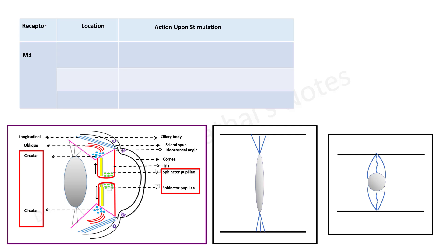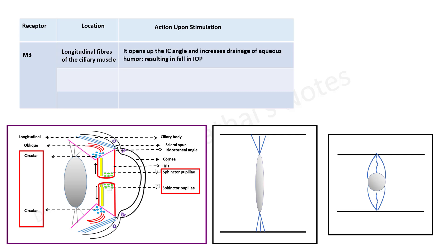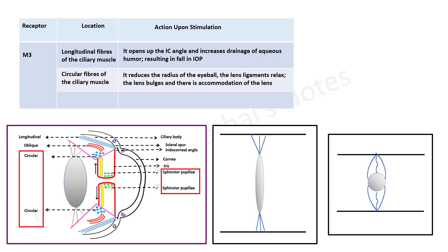When M3 receptors in the longitudinal fibers of the ciliary muscle are stimulated, these muscles contract, the iridocorneal angle opens up, drainage of aqueous humor increases, and intraocular pressure falls. Stimulation of M3 receptors in the circular fibers reduces the overall radius of the eyeball, the lens ligaments relax, the lens bulges, and accommodation occurs. M3 receptors in the sphincter pupillae cause miosis upon stimulation.